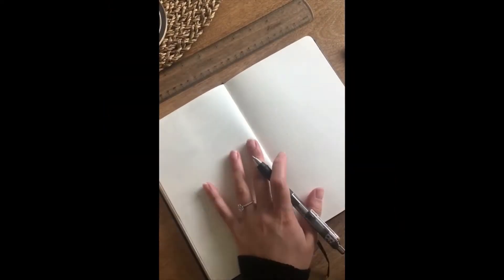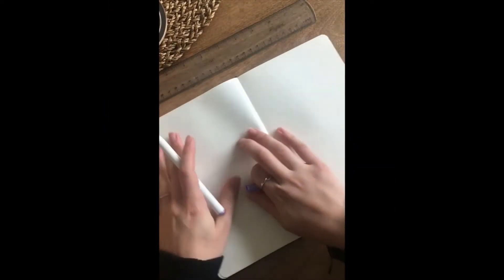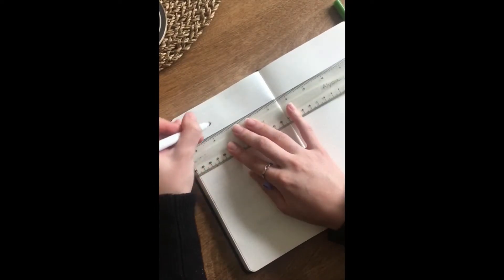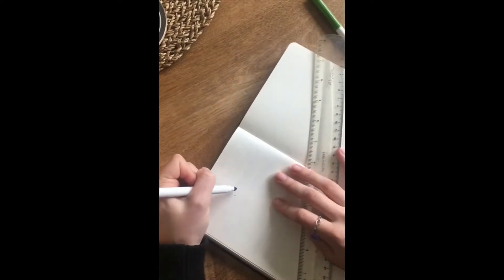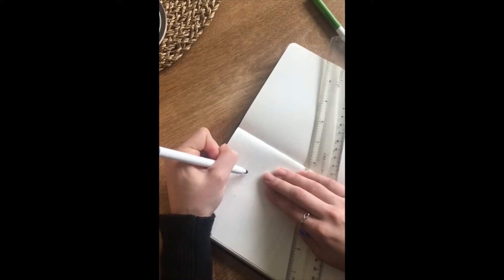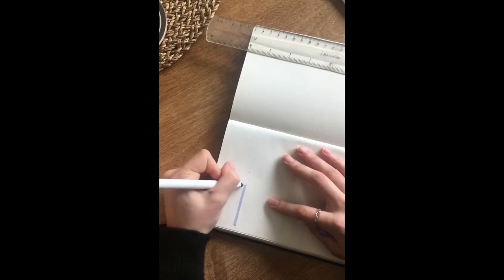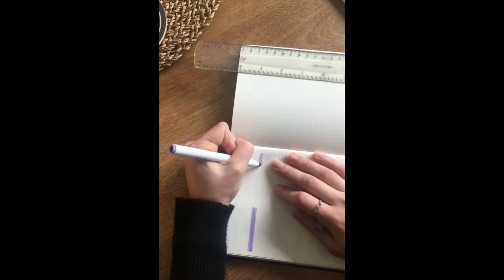Now I'm just going to show you two different ways to create your weekly schedule. With journaling, it helps to sometimes outline how you want your page to look with pencil first, but usually you should figure out what things you need to include on your page.